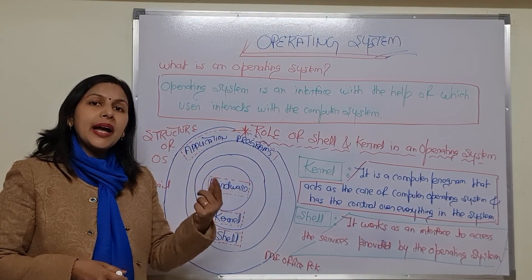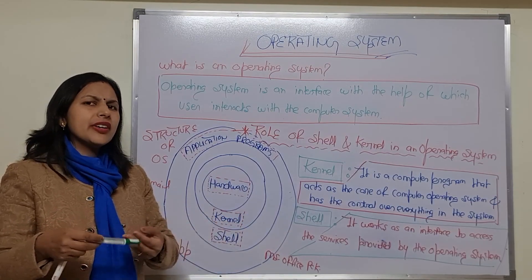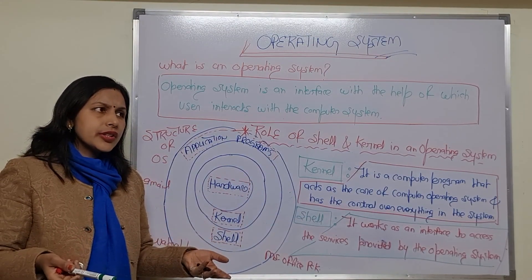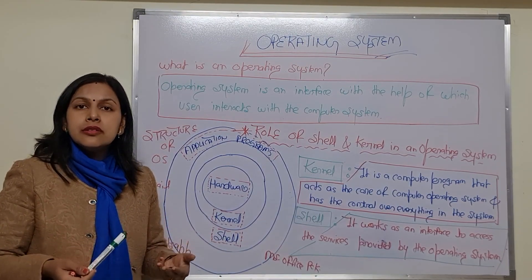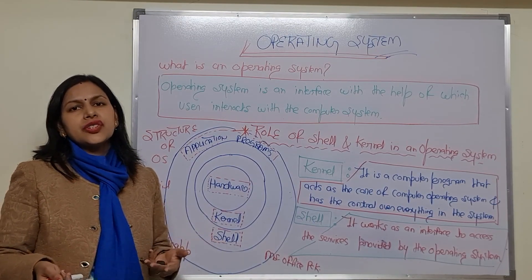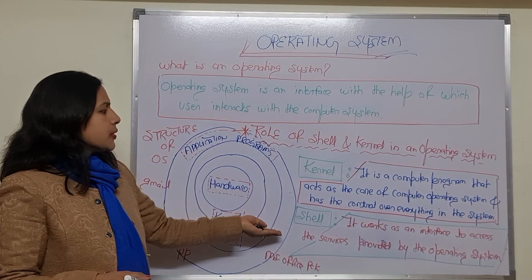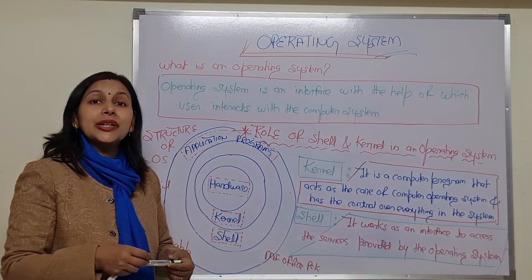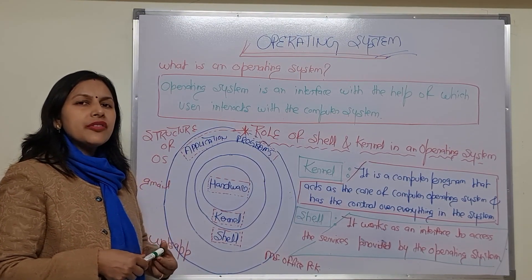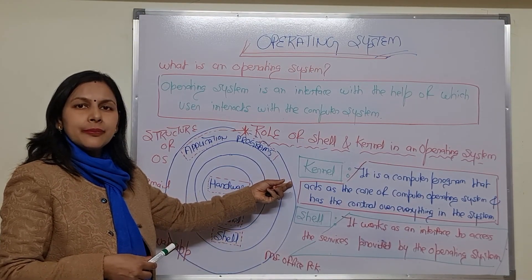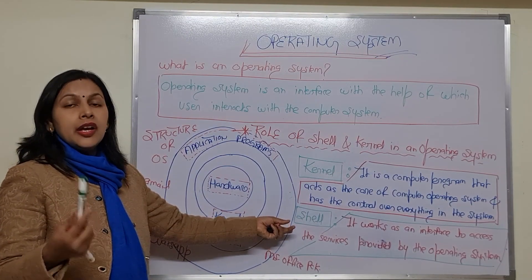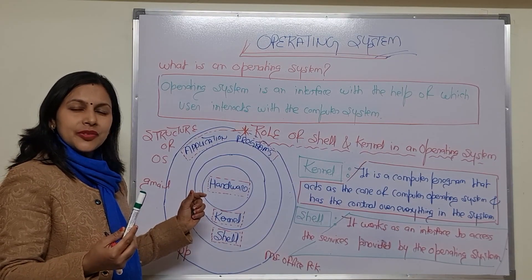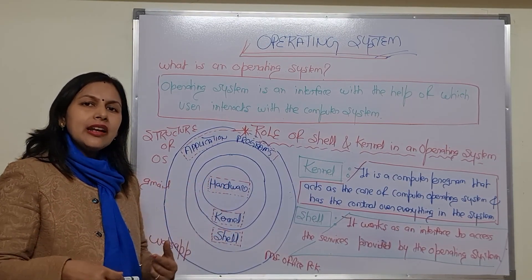Kernel is the internal or inner layer of the operating system, while shell is the outer layer. Types of kernel include monolithic kernel, micro kernel, and hybrid kernel. Types of shell include Corn shell, C shell, and Bourne shell. The kernel performs management tasks like memory and scheduling management, while the shell is responsible for communication between the user and the kernel.